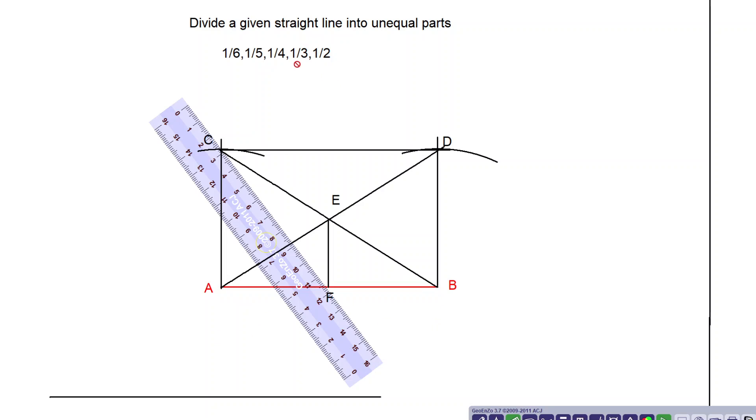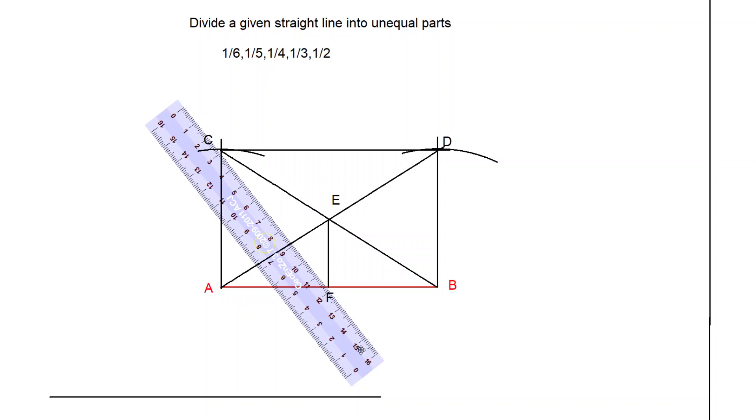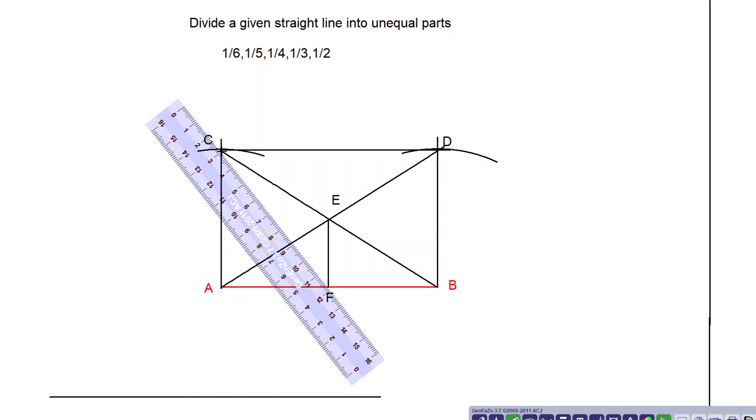Next part is we have to find out the one-third. To get the one-third, we connect F and C. Connect F and C. So I am connecting F and C, point C. Connected.